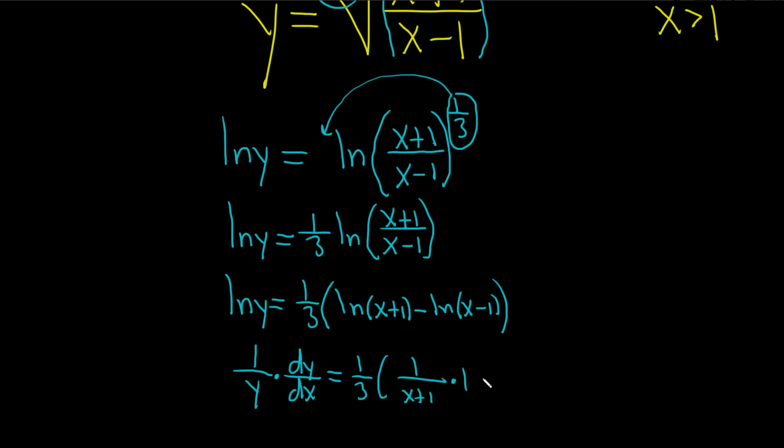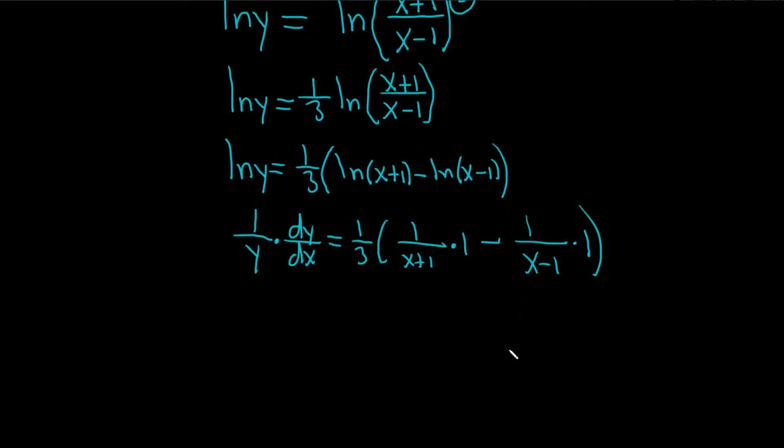minus, same thing here, 1 over x minus 1 times the derivative of the inside, which is 1. So we use the chain rule all three times—1, 2, 3 times—and it was exactly the same except we got different results.